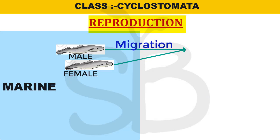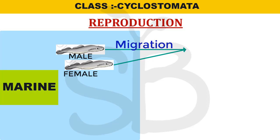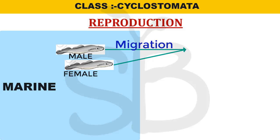Reproduction involves both male and female organisms. Commonly they are marine, and reproduction involves spawning. Their eggs are laid in marine habitat. Due to salt concentration differences, they migrate. The life cycle is interesting.